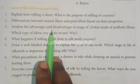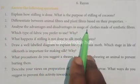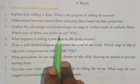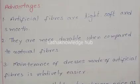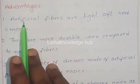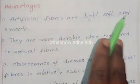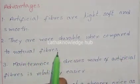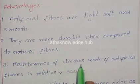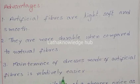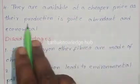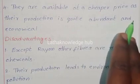Analyze the advantages and disadvantages in usage of clothes made of synthetic fibers. Advantages: Artificial fibers are light, soft, and smooth. They are more durable when compared to natural fibers. Maintenance of dresses made of artificial fibers is relatively easier. They are available at a cheaper price as their production is quite abundant and economical.